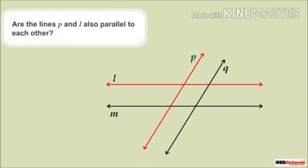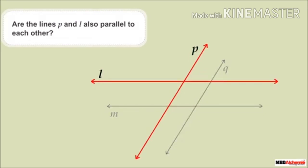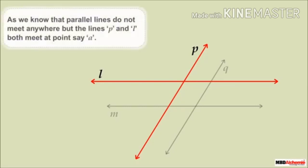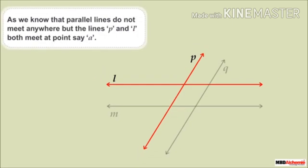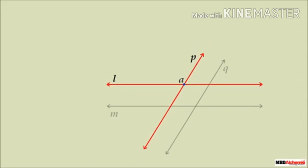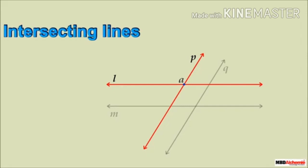Are lines P and L also parallel to each other? No, these are not parallel to each other. As we know parallel lines do not meet anywhere, but lines P and L both meet at point A. Thus, lines P and L are not parallel — they cut each other at point A. So these lines are called intersecting lines.